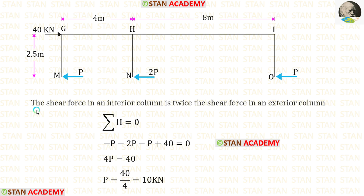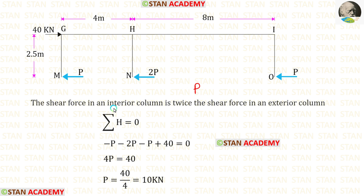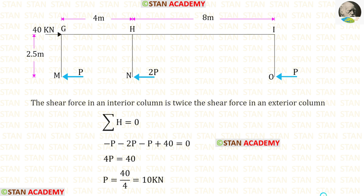We know the assumption: the shear force in an interior column is twice the shear force in an exterior column. Here we have only one interior column, H, and exterior columns G-M and I-O. Let us keep the shear force as P, so the interior column H will have shear force 2P, and exterior columns G-M and I-O will have P. The shear forces act in the opposite direction to the load, towards the left side.